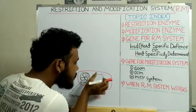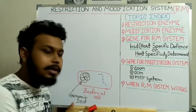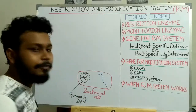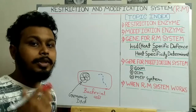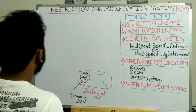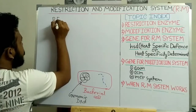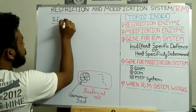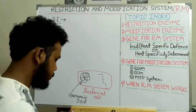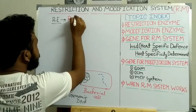The question is: how do these restriction enzymes recognize this foreign DNA and how do they cut it? So first we have to discuss about the restriction enzyme. The restriction enzyme, which I denote here as RE, is also known as the restriction endonuclease.